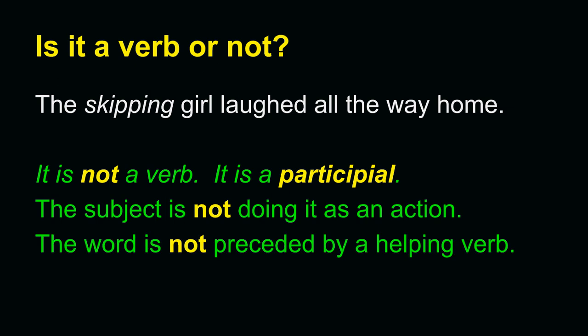Also, the word is not preceded by a helping verb. This is not always a certain clue to the identification of a participial, but it will help. More importantly, you must understand that skipping works as an adjective to modify girl. It tells which girl. Skipping is being used as an adjective, so you should not list it as a verb even though it looks like a verb.